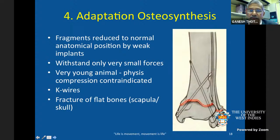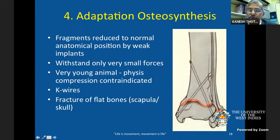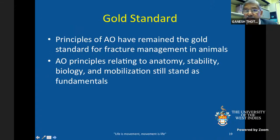Adaptation osteosynthesis involves reducing fragments to normal anatomical position using weak implants like K-wires or small thin pins, which can withstand only smaller forces. It is usually performed in young or juvenile animals where the growth plate or physis is open. These four principles laid by the AO remain the gold standard practiced by human and veterinary surgeons today.